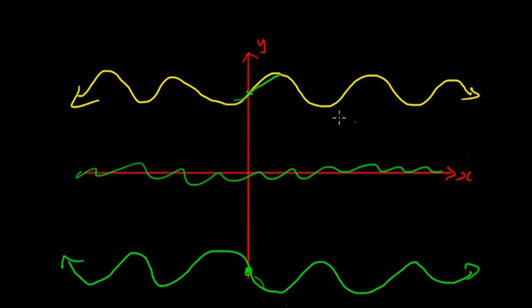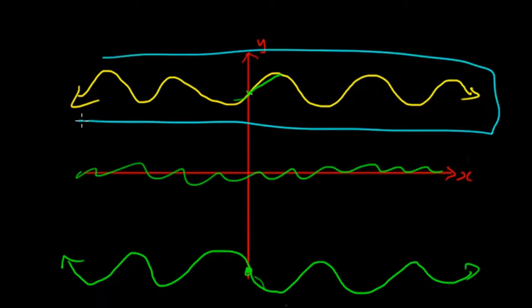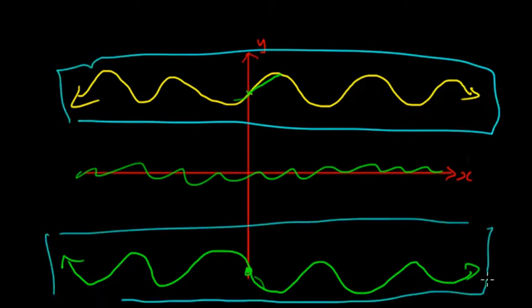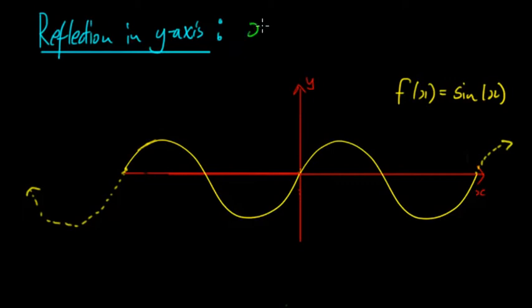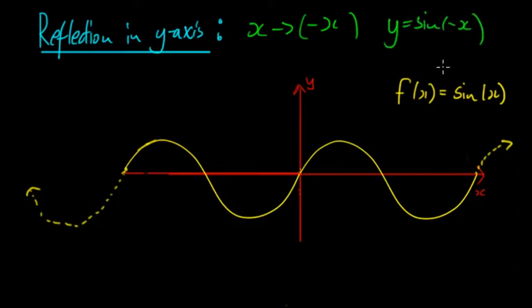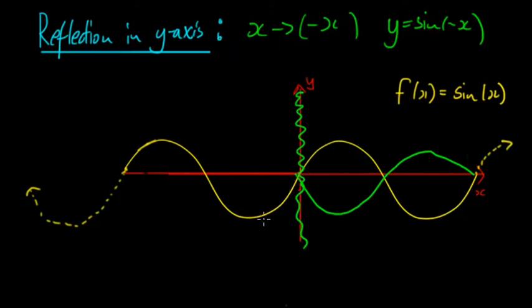You need to be careful: if the translated graph has no x-intercepts, you need to check whether it sits in the positive or negative region. When graphing sine and cosine, a really good approach is to work out the x-intercepts first, then graph from there. Now for reflection in the y-axis — we replace x with negative x — giving us y = sin(-x). This means we flip the graph in the y-axis.